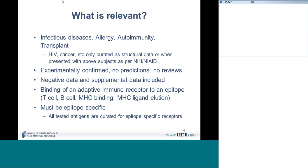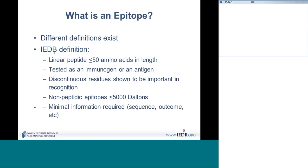Every experiment represents the binding of an adaptive immune receptor — a T-cell receptor or antibody — to each of the relevant genes. All data is specific, and we also capture every antigen. The TCR or antibody may be epitope-specific, but it may also bind a whole protein or whole cell of the virus — we capture all of that data. We had to define what we were going to call epitopes, because different communities have different concepts.